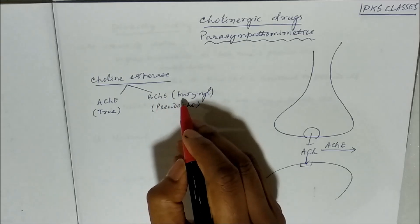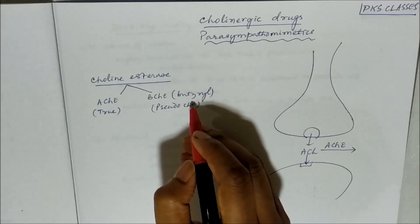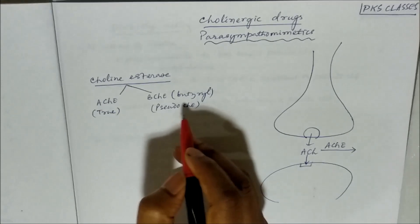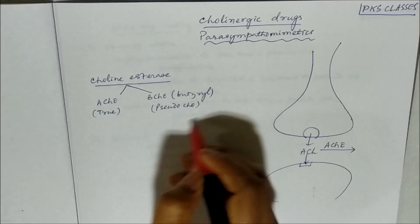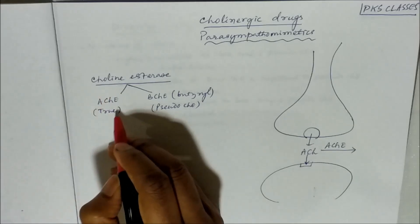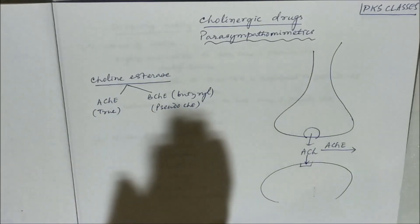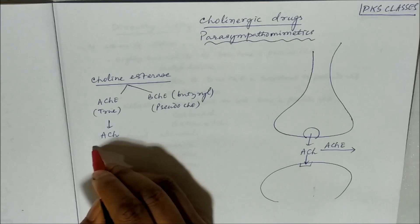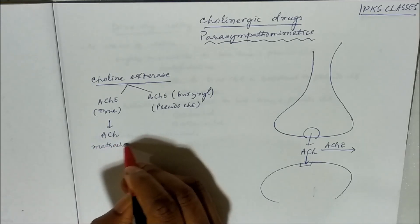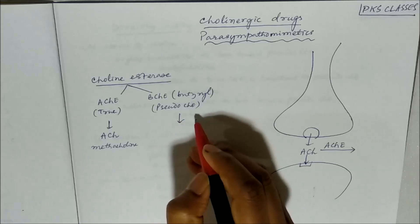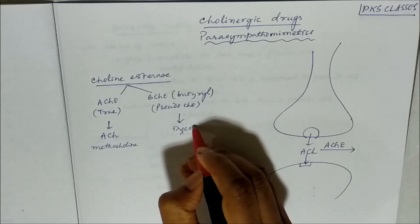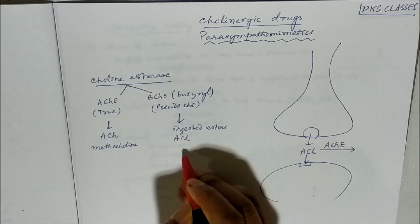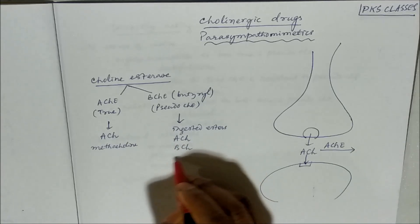Acetylcholinesterase, found at all cholinergic sites, RBCs, and grey matter, hydrolyzes mainly acetylcholine and methylcholine. Butyrylcholinesterase, on the other hand, hydrolyzes ingested esters, and in addition can also hydrolyze acetylcholine, butyrylcholine, and benzoylcholine.